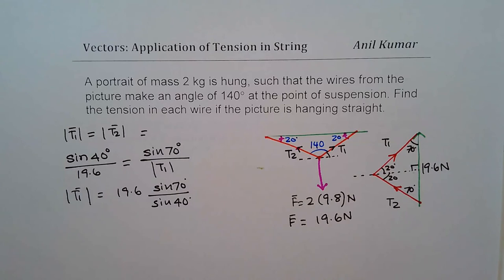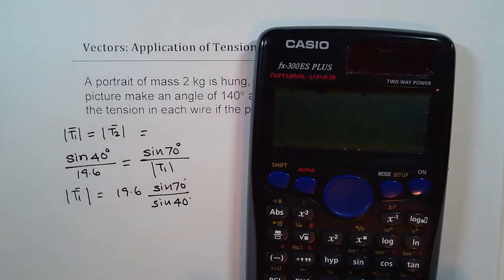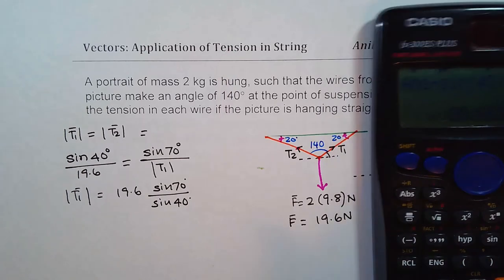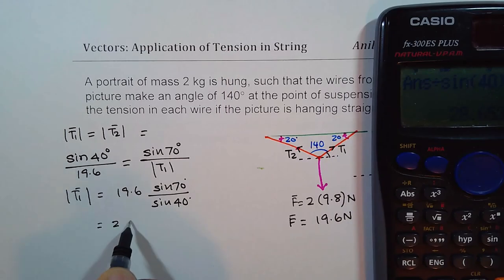So let us calculate this, which becomes our answer. So it is 19.6 times sine of 70 degrees, and we will divide this by sine of 40 degrees. We get 28.65 newtons.